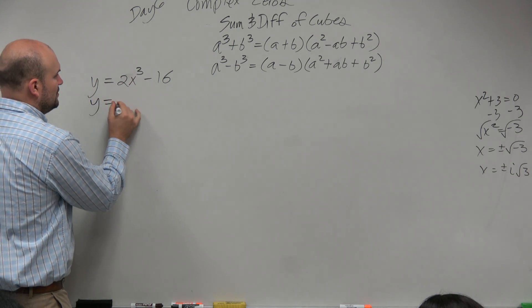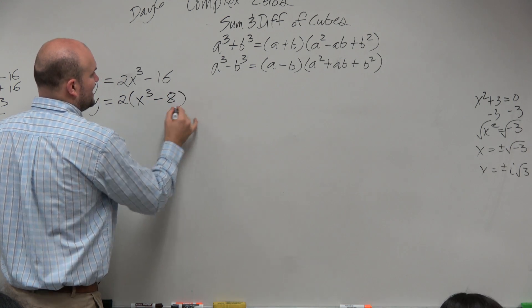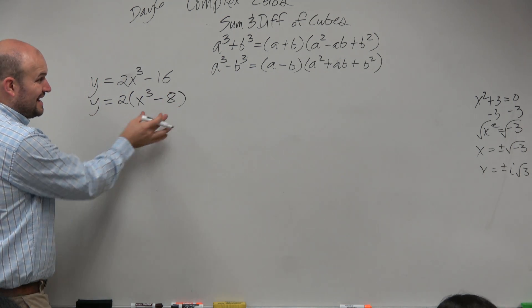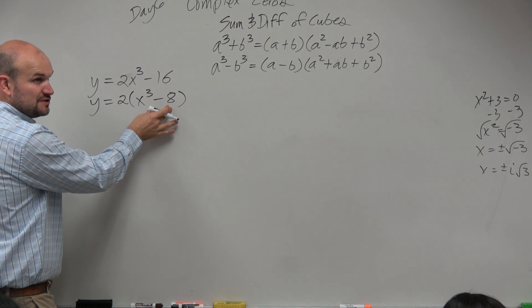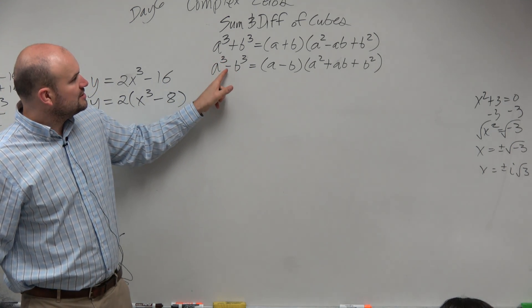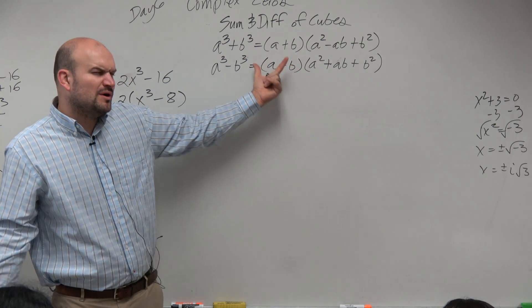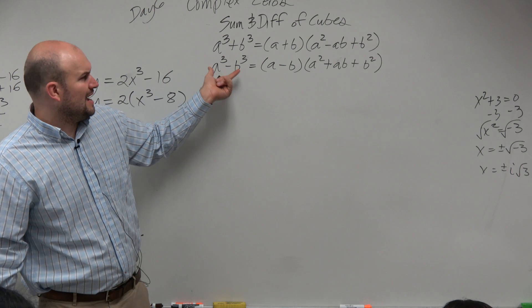But if I factor out a 2, I get x cubed minus 8, right? And now I could factor that being the difference of two cubes, because basically the difference of two cubes is saying if you have a cube term subtracting another cube term, then you really just have a minus b. Now, what does a and b relate to a cubed minus b cubed?